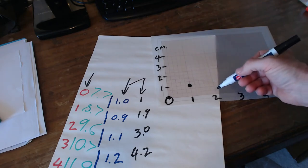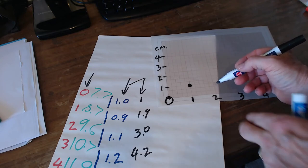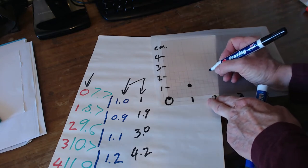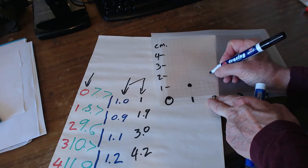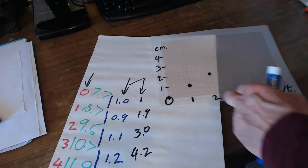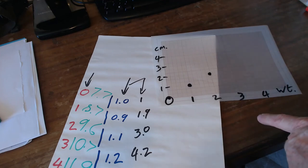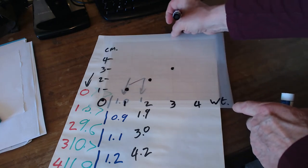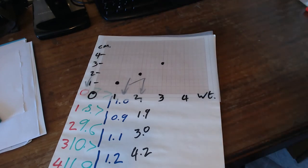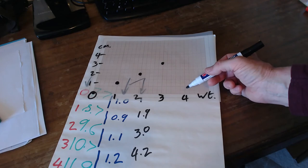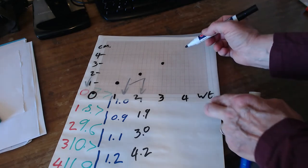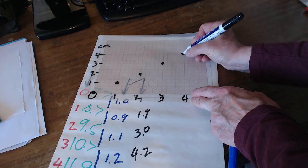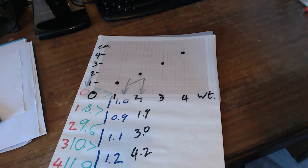For three ounces added our extension went up to three. Finally we had a four ounce weight and our total extension was about 4.2. Although this is far from precise, the one thing you might be able to see is that these points are all approximately on a straight line.